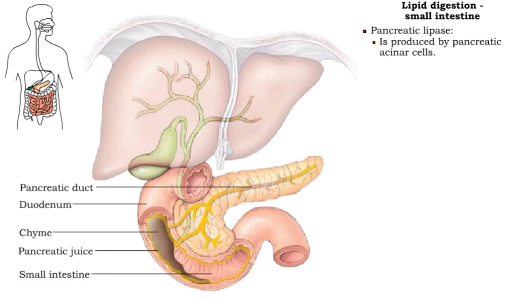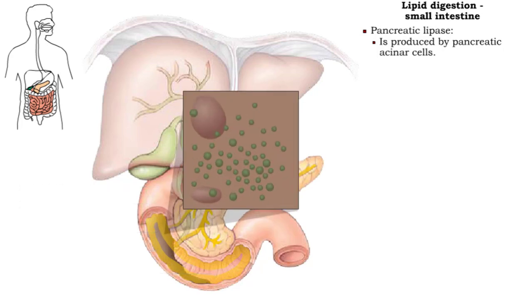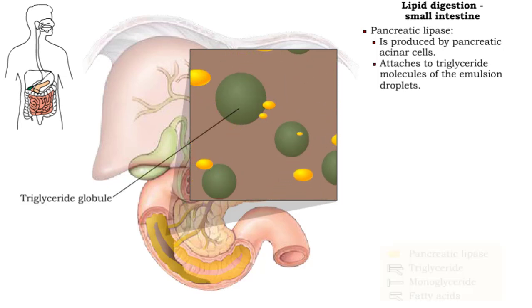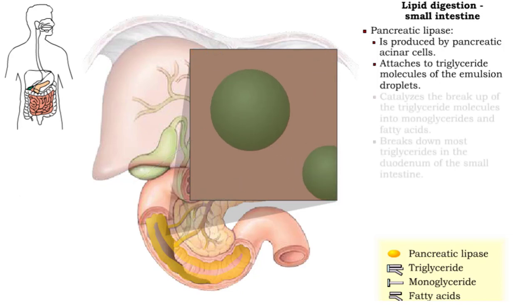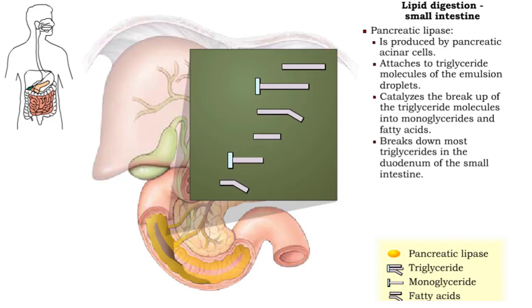Pancreatic juice contains large amounts of pancreatic lipase, the principal triglyceride-digesting enzyme. Pancreatic lipase molecules attach to triglyceride molecules of the emulsion droplets. Each triglyceride molecule is catalyzed and broken into one monoglyceride and two fatty acids.